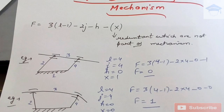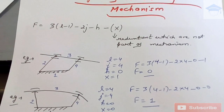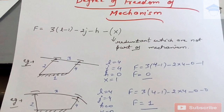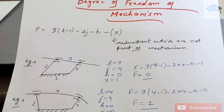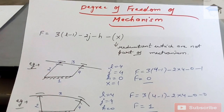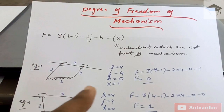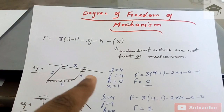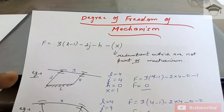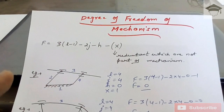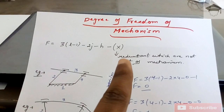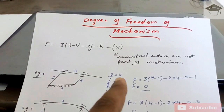We take x equal to one because link three can translate linearly without affecting links two and four — it can move independently. So we subtract one from the final answer. Substituting in the Kutzberg equation: degree of freedom equals 3(4−1) − 2(4) − 0 − 1 = 1. You can substitute x directly or apply the basic Kutzberg equation and then subtract the redundant by logic.